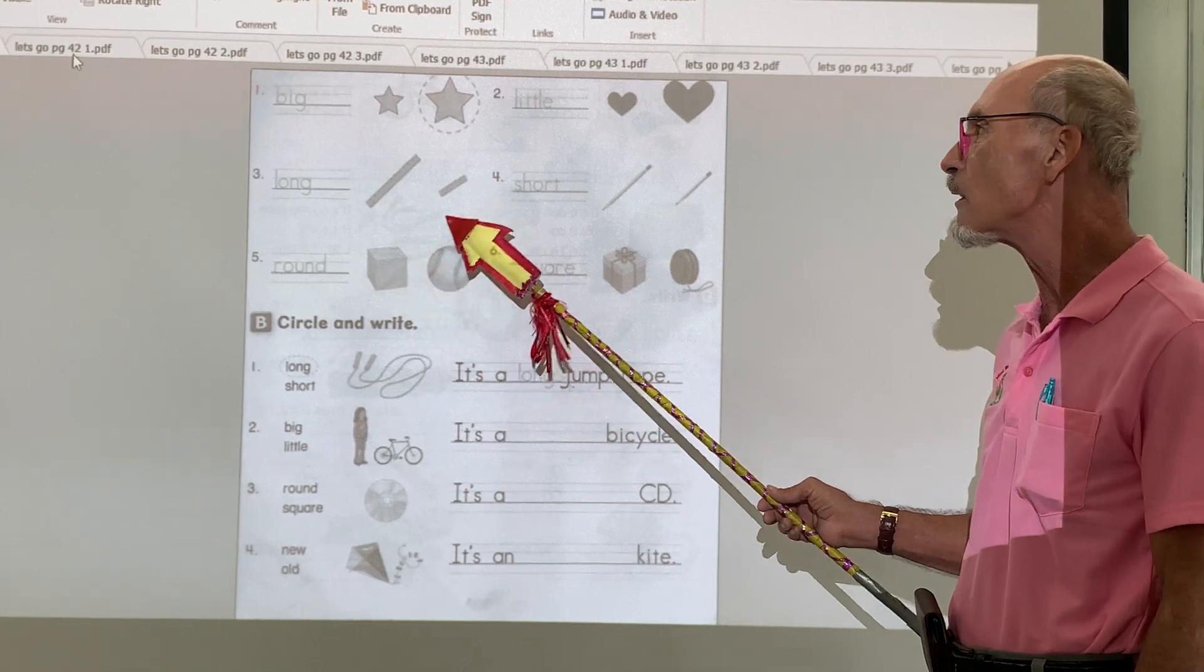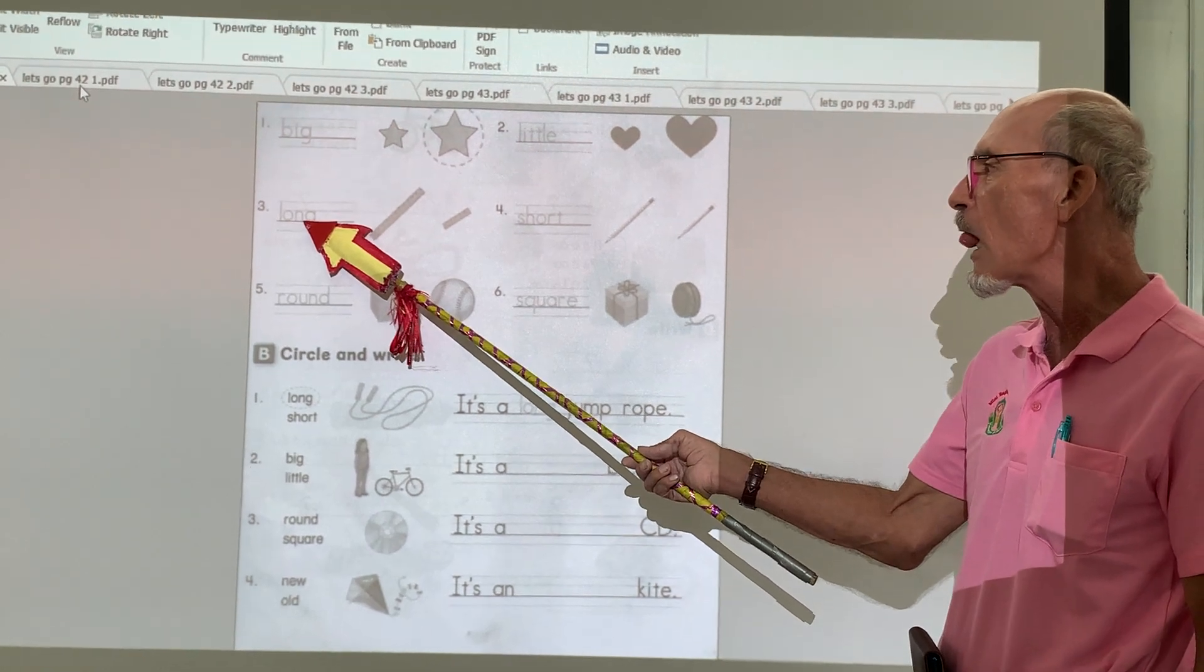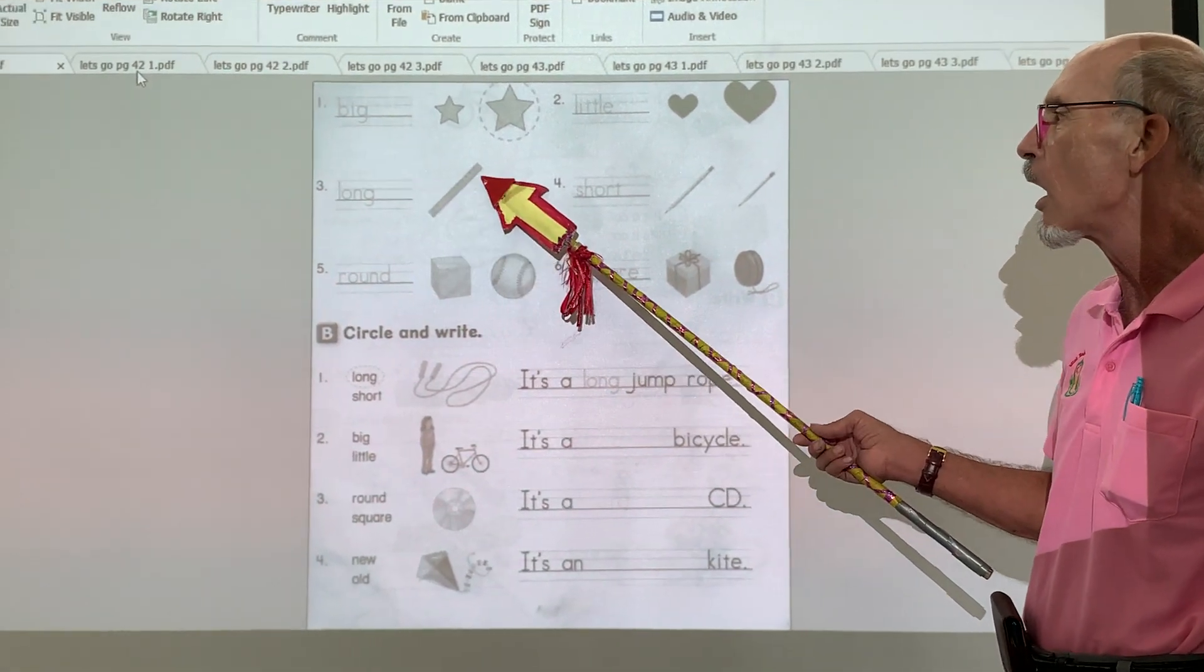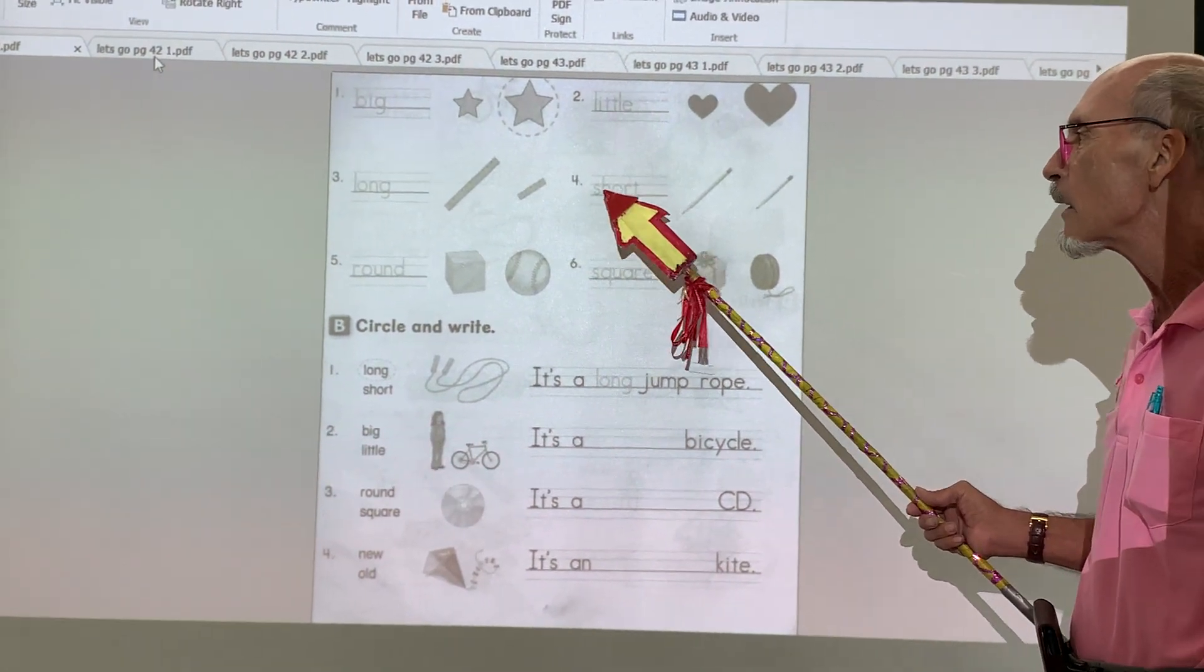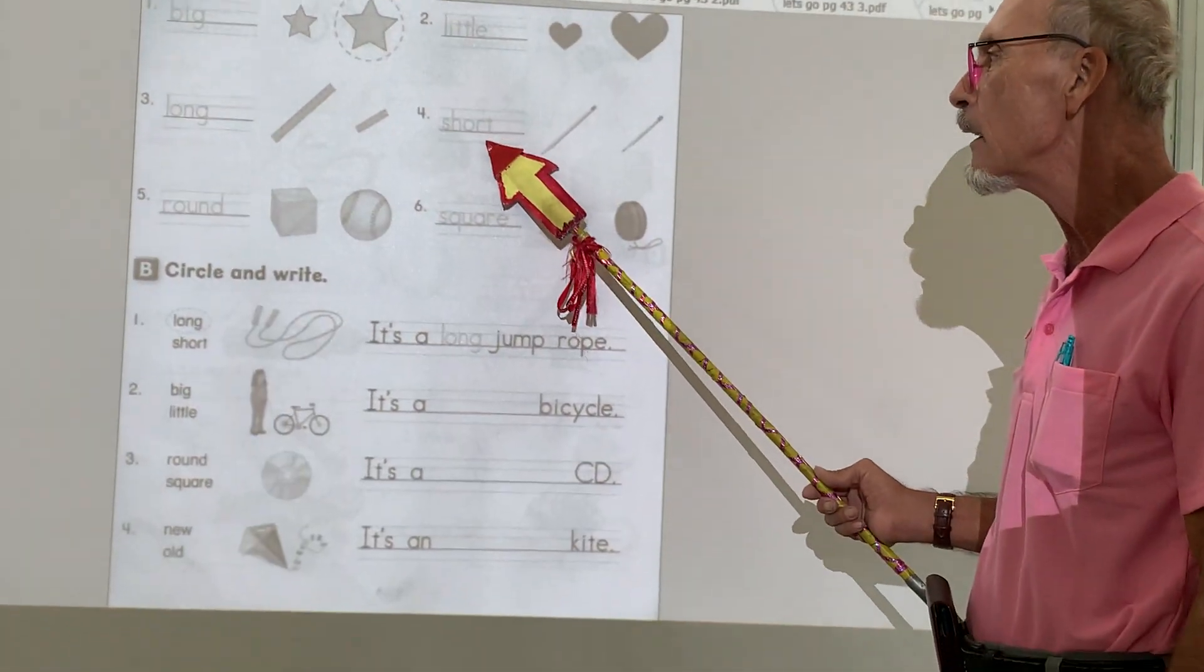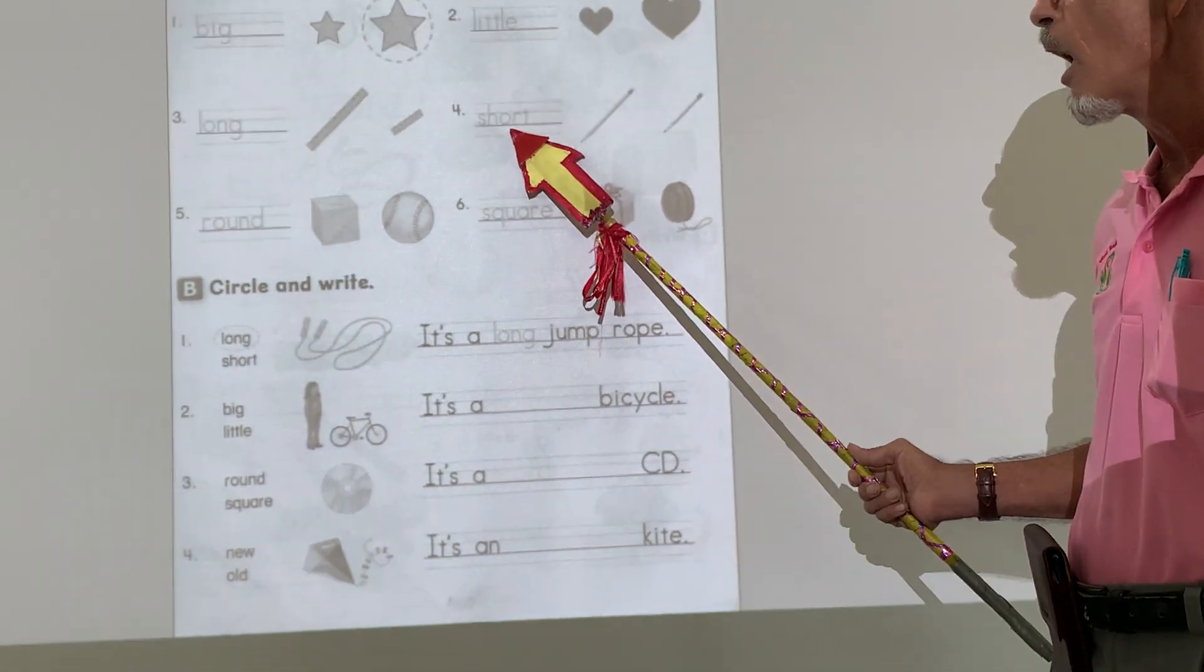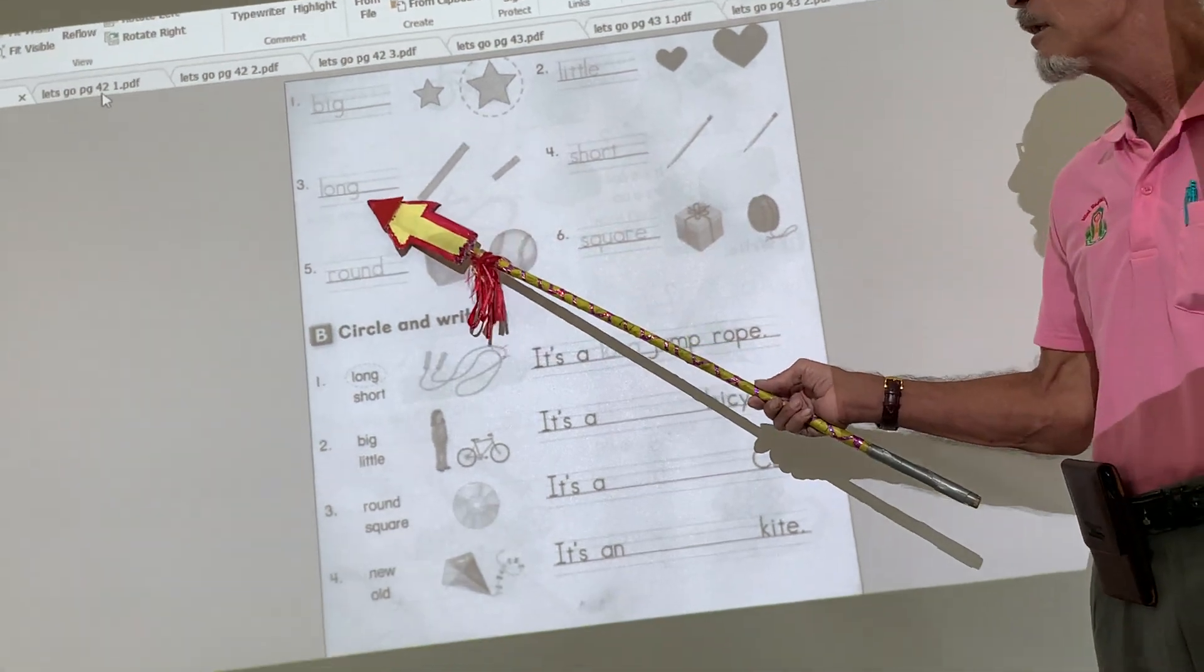Which one of these is little? Number three, long. L-O-N-G. Long. There's a long and there's a short. Short. S-H-O-R-T. What you want to do is draw a circle around the long one. Draw a circle around the short one.